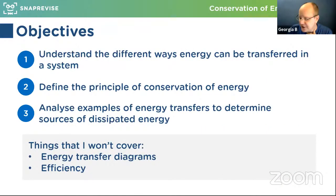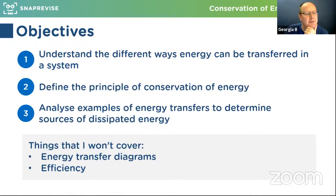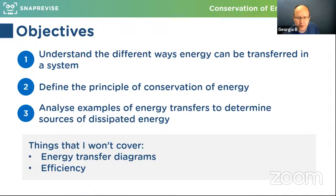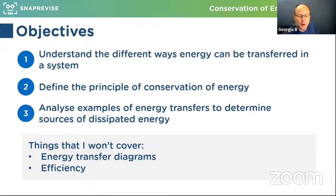So the objectives today — please do ask questions at any point; I'm monitoring the chat as I'm talking. We're going to be covering your understanding of different ways energy can be transferred in a system, defining the principle of conservation of energy, and looking at some examples of energy transfers to discuss sources of dissipated energy — energy that is wasted to the surroundings.